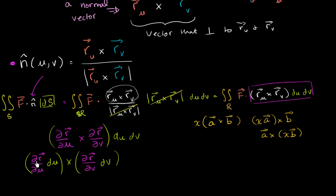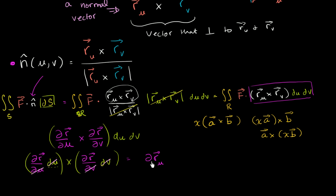This is how much our vector changes when you have a very small change in u. These look notationally like two different things, but that's just because when we take partial derivatives we specify that the vector function is a function of multiple variables and we're taking the derivative with respect to only one of them. But this is also an infinitesimally small change in u — we're just using slightly different notation. So, loosely speaking, when you divide by something and multiply by the same thing, you can cancel them out.